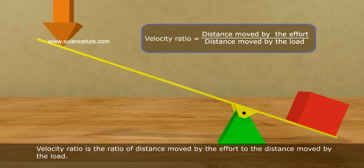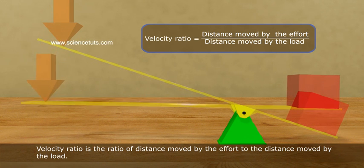Velocity ratio is the ratio of distance moved by the effort to the distance moved by the load.